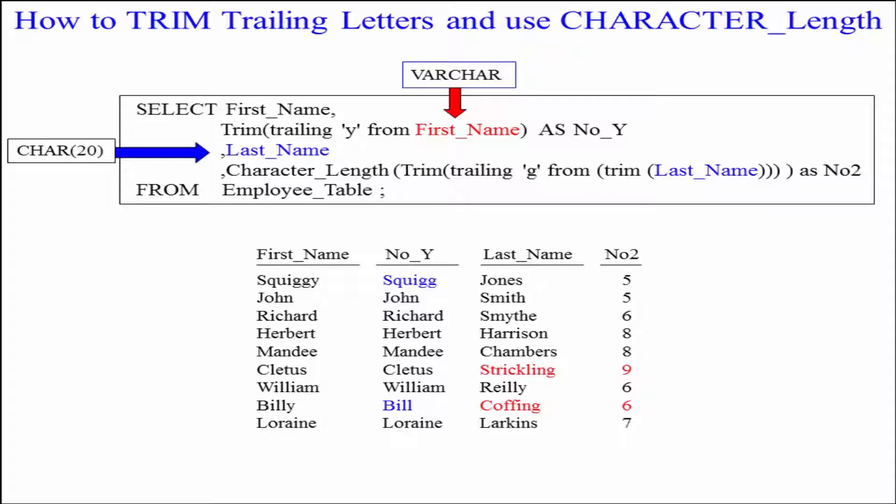We're going to select the first name, and since it's VARCHAR there's no spaces at the end. We're going to trim the trailing Y from first name. As you can see, Squiggy is now Squig and Billy is now Bill.